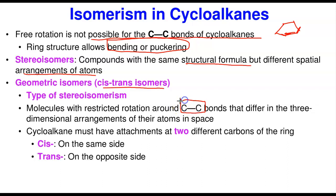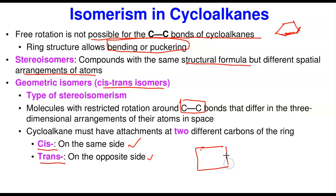The type of stereoisomerism we're looking at here is called geometric isomerism, or cis-trans isomerism. Molecules that cannot rotate around the carbon-to-carbon single bond differ in their three-dimensional arrangement of atoms in space. For this to occur in cycloalkanes, there must be at least two attachments on two different carbons. If the two groups are on the same side, it's cis; if on opposite sides, it's trans.